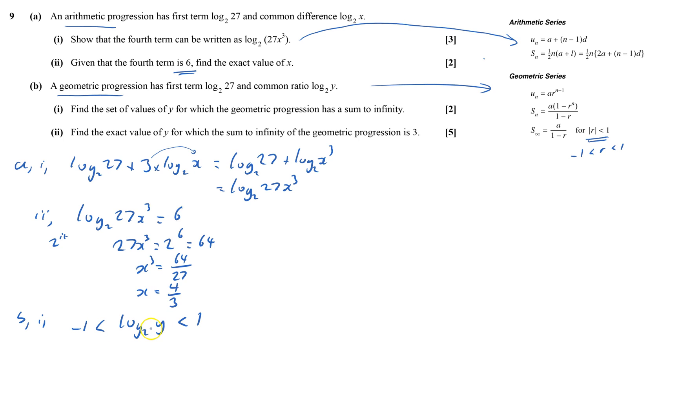I don't want log to base 2, so I need to get rid of that. To do it, that will vaporize the log to base 2 and just leave me with y. And so it'll be 2 to power minus 1 or 2 to power 1. And so that is a half, which is less than y which is less than 2.